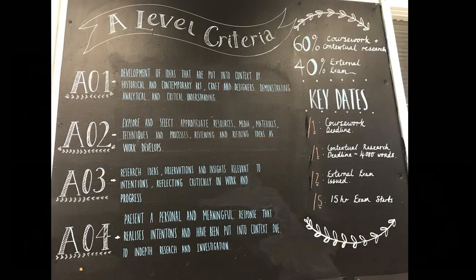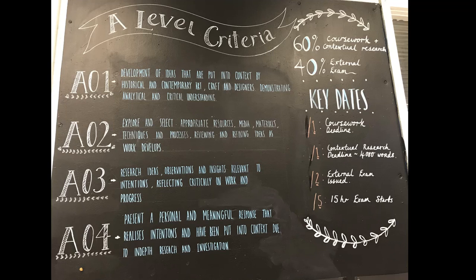The Art and Design A level course is graded on the following four assessment objectives. Assessment objective 1 looks at how you develop your ideas through artists and research relating to your chosen theme. The examiner is looking to see your understanding of this research and its purpose in your work.